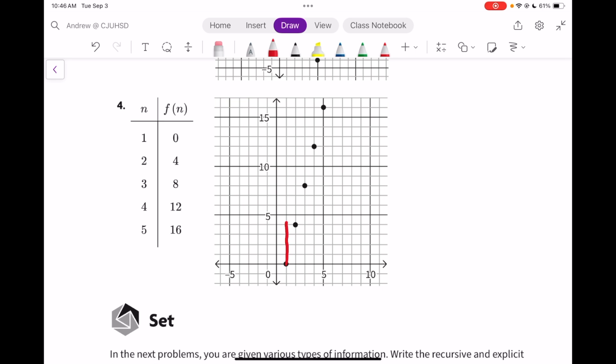Now we're back to a positive slope. We're going up 4 and over 1, a positive 4 and a positive 1. Up 4 and up 1.